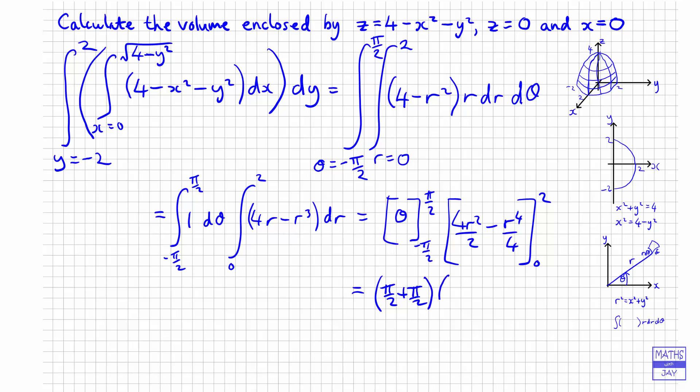So that gives us pi by 2 minus negative pi by 2, so adding on a pi by 2 there. And we'll have 2 times 2 squared, which is 8, minus 2 to the power of 4 over 4. So that's 16 over 4. So that will be 4.